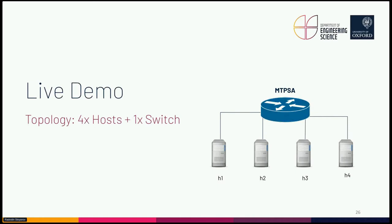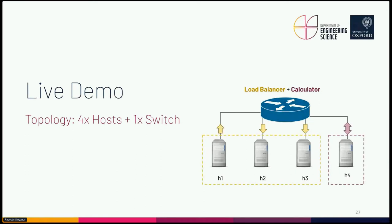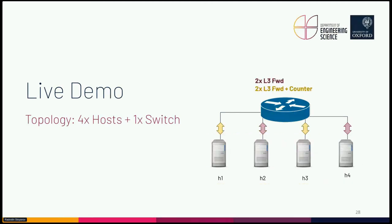For the demo, I have two user programs. The first program is a load balancer and the second is a calculator. The setup is created with Mininet and has four nodes and a single switch. Hosts one, two, and three are connected to the load balancer, and host four is connected to the calculator. For the second demo, I have four user programs with the same setup — four nodes each connected to a single switch — where users one and three, in addition to layer-three forwarding, also use a counter extern.